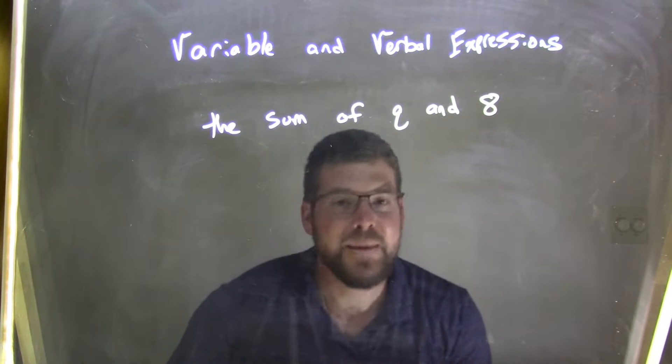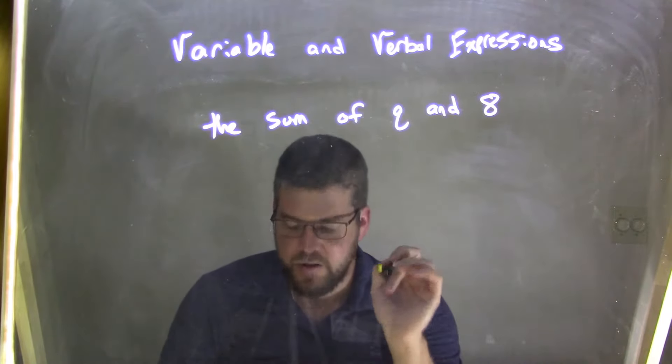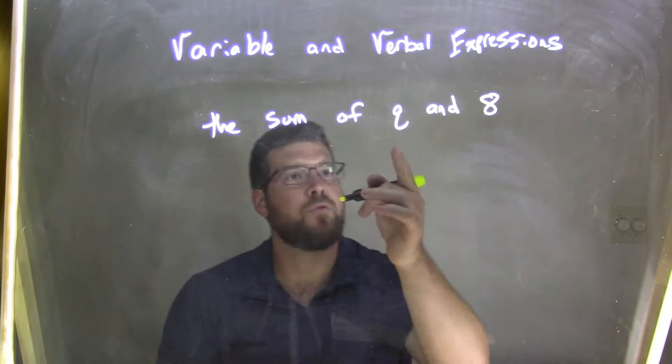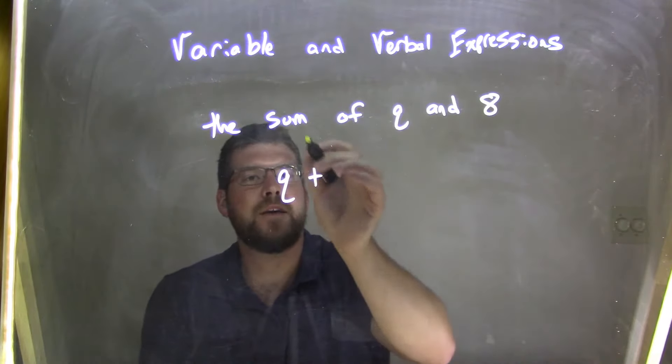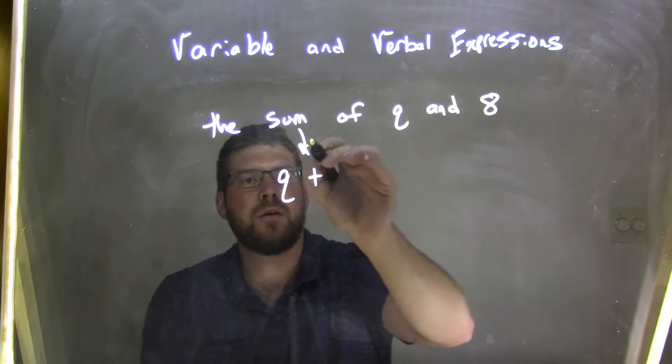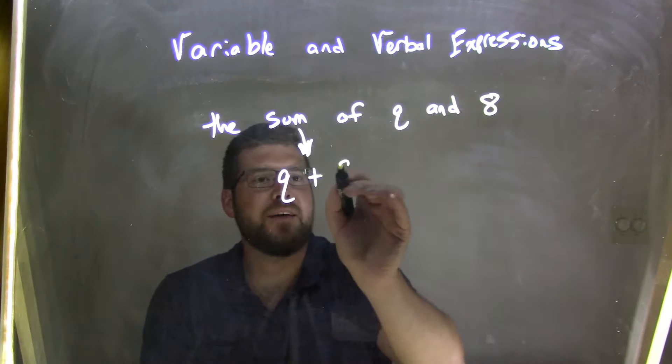So immediately I'm seeing sum. That should trigger in my mind: addition. The sum of Q and 8. Q is written first, so the sum of Q—addition, that's where the sum comes in, right there—sum of Q and 8.